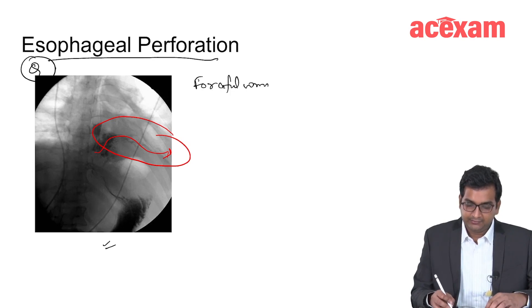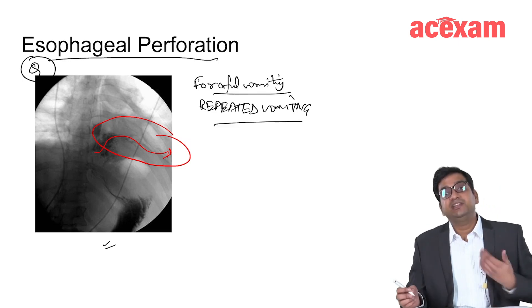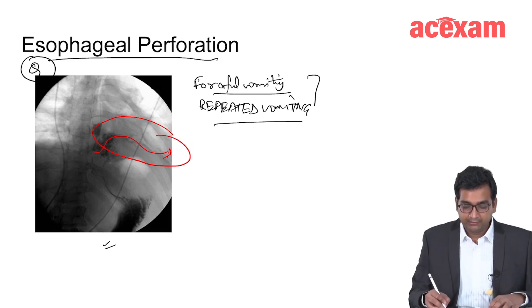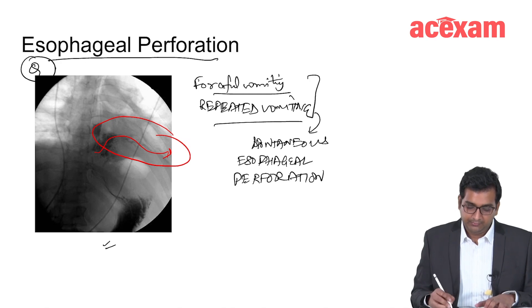After forceful vomiting or repeated vomiting, patient develops severe chest pain along with fever. What should be the diagnosis? Diagnosis should be possible spontaneous esophageal perforation or Boerhaave syndrome.